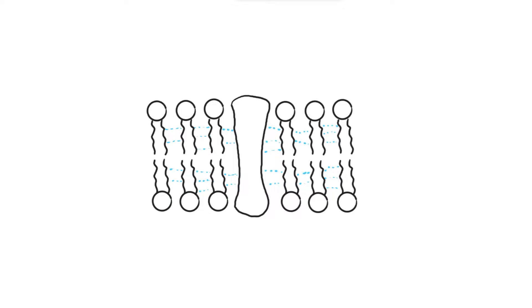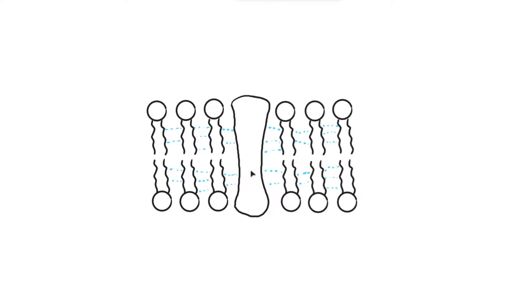In this video we'll be looking at how different factors affect the membrane structure. There are namely two particular factors: temperature and solvents. Here is a diagram that shows what the plasma membrane or the phospholipid bilayer looks like. You've got the phospholipids with the phosphate head and the two fatty acid tails, and in the middle we can sometimes have protein carriers or protein channels that allow facilitated diffusion or active transport.